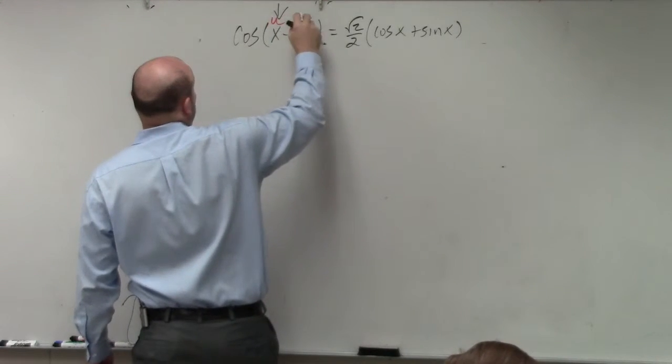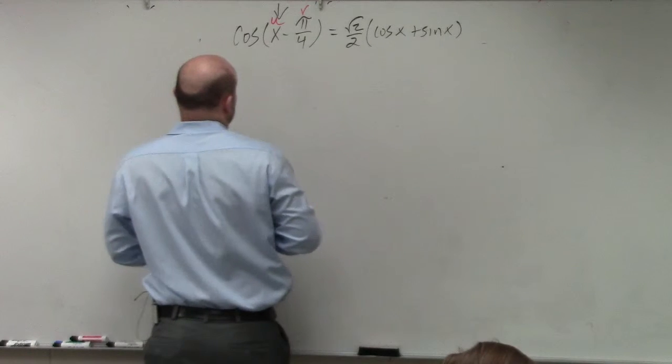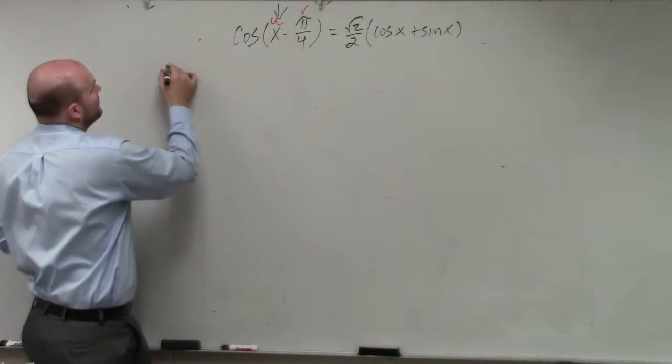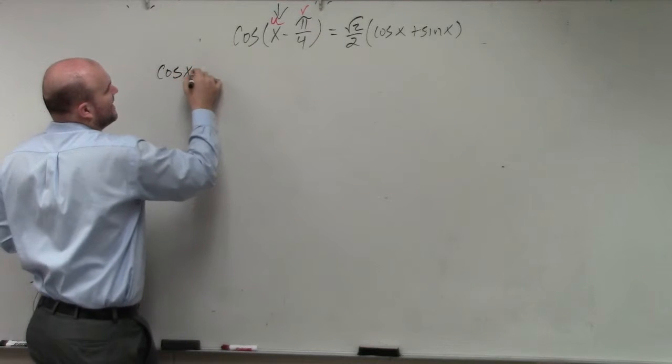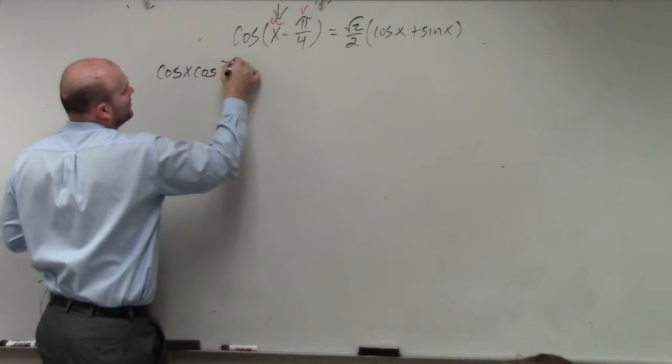So I'll identify my u and my v. I'll work through this a little bit quicker. Therefore, my left side is now going to be cosine of x times the cosine of pi over 4.